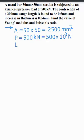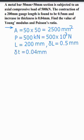The gauge length L is equal to 200mm. Then it is found to be 0.5mm contraction, that is delta L is equal to 0.5mm. The change in thickness delta t is equal to 0.04mm. So find out the Young's modulus, that is capital E, and Poisson's ratio.